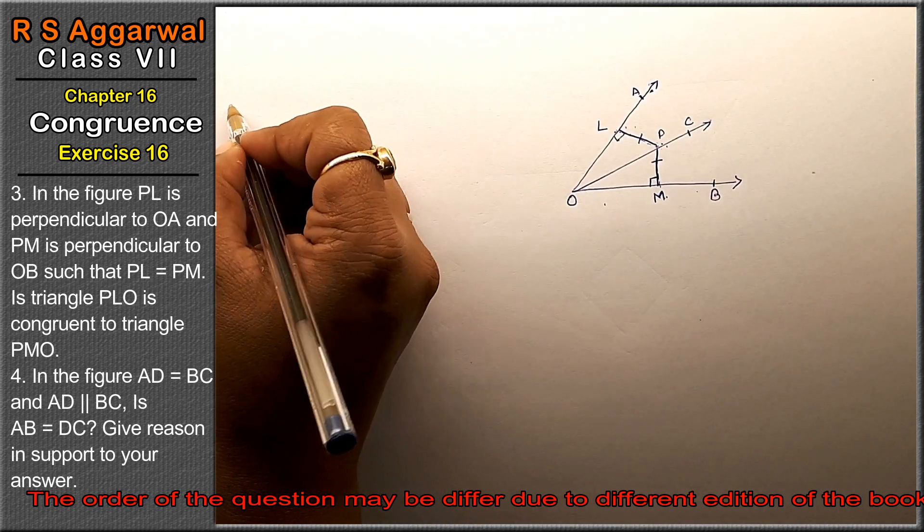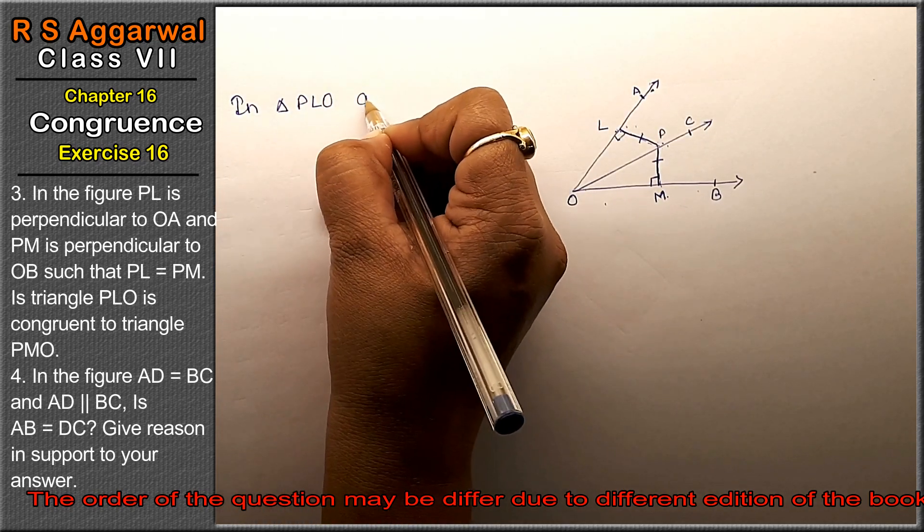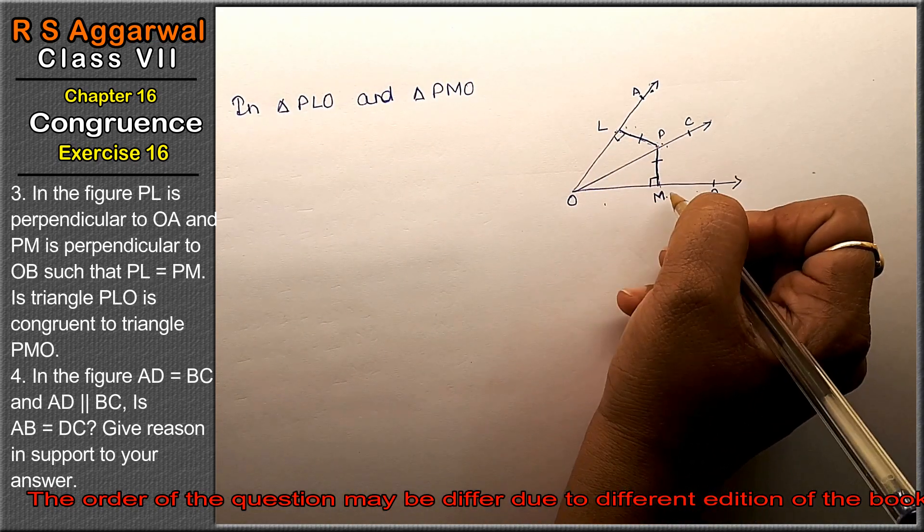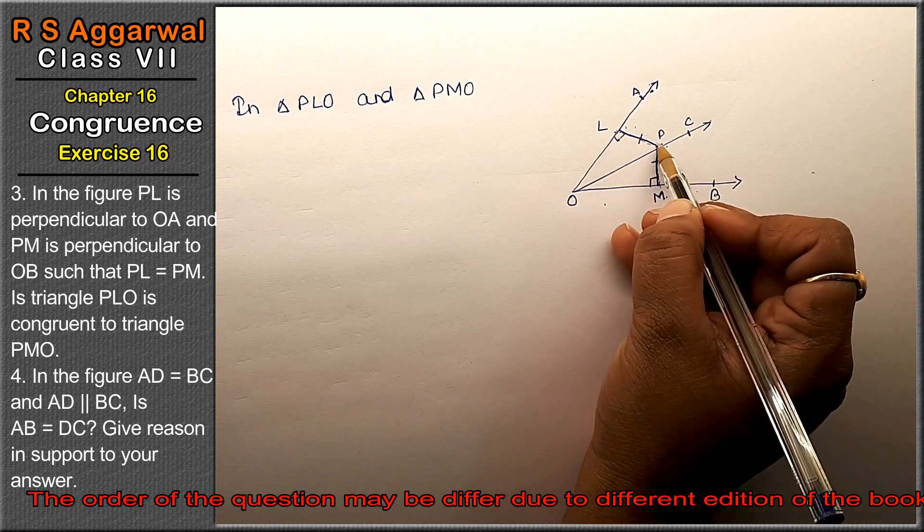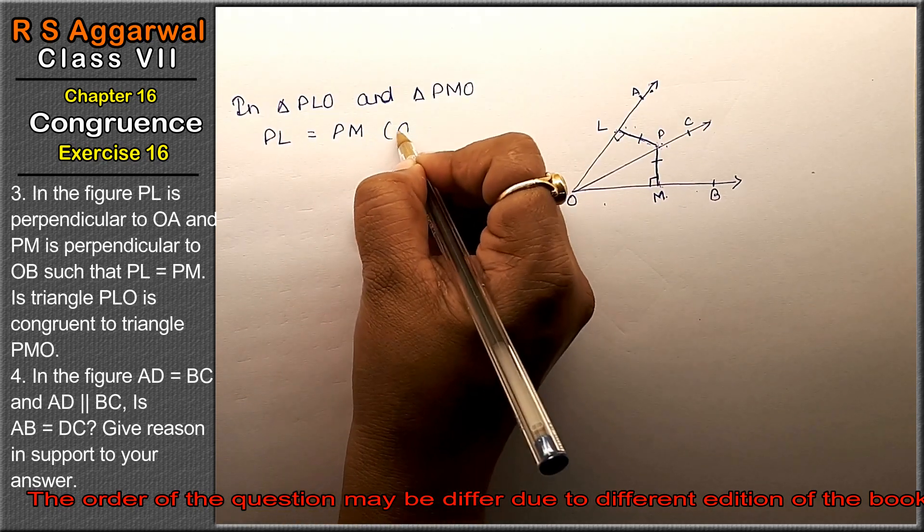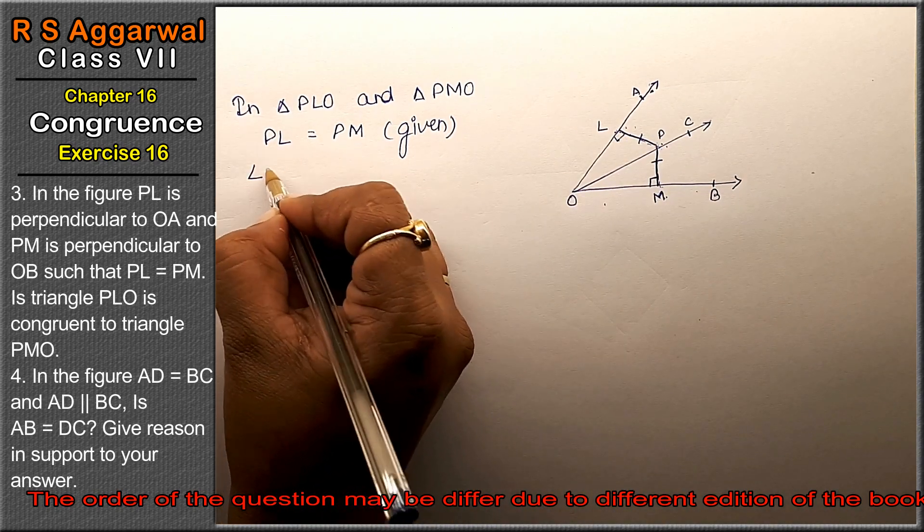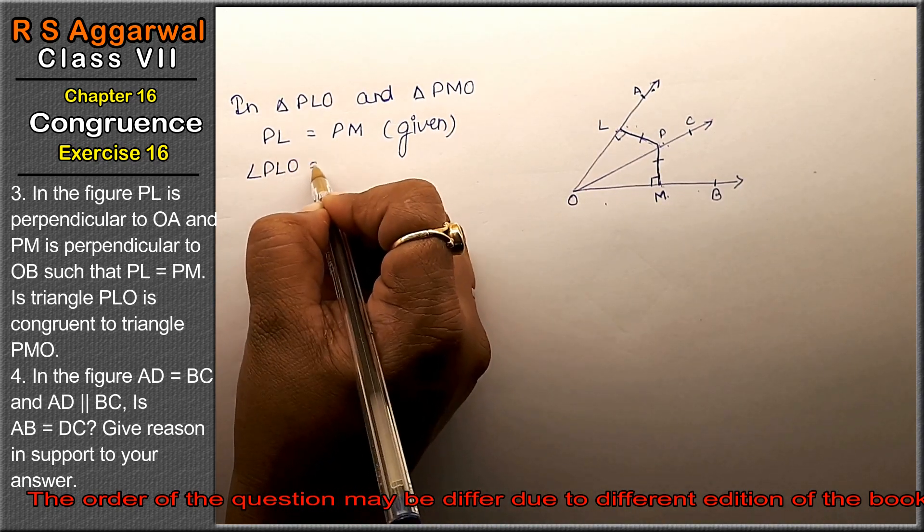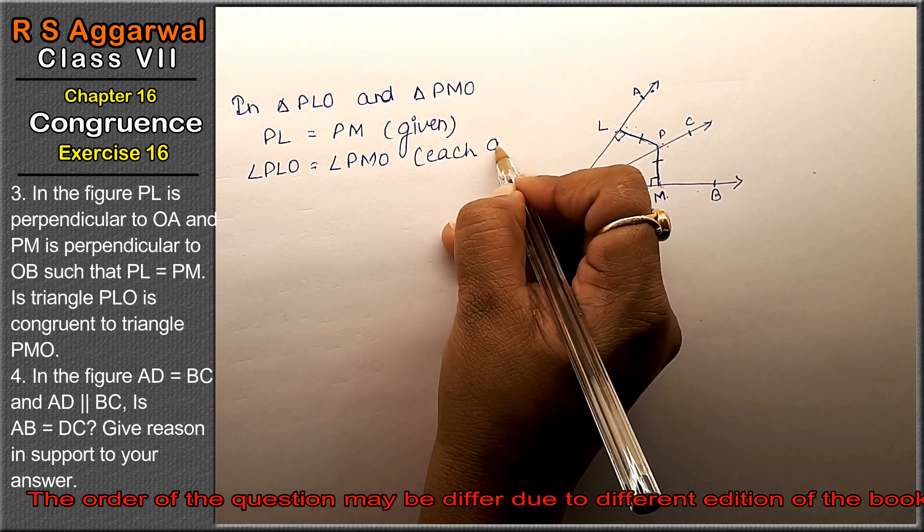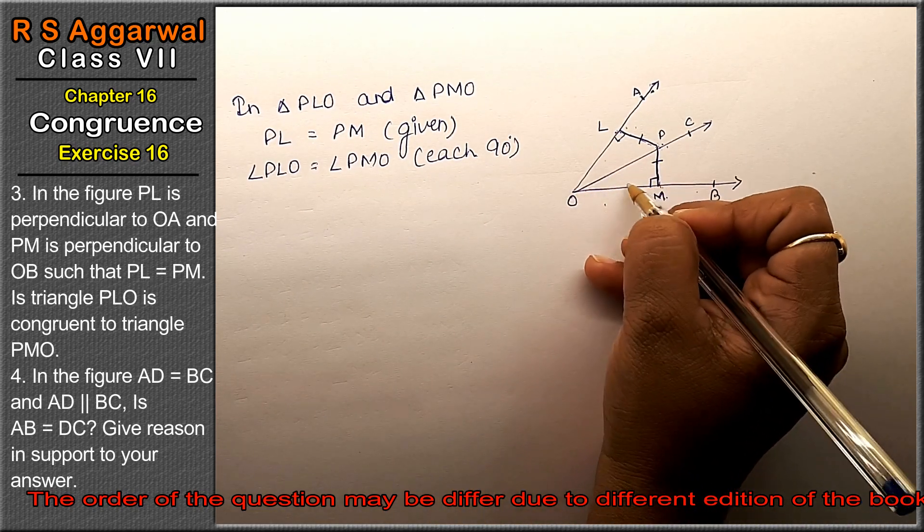Let's take triangle PLO and triangle PMO. It is given that PL equals PM. Also, angle PLO equals angle PMO, each 90 degrees, because perpendicular lines form 90 degree angles.